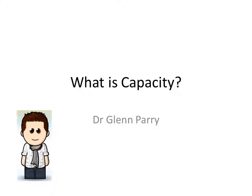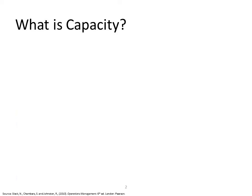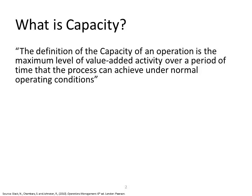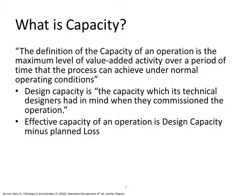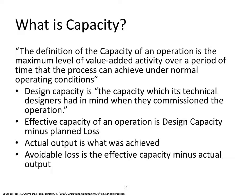So let's talk about what is capacity. The definition of capacity of an operation is the maximum level of value-added activity over a period of time that the process can achieve under normal operating conditions. We talk about design capacity — that is the capacity which the designers of the system had in mind when they commissioned the operation. The effective capacity of an operation is the design capacity minus any planned loss. The actual output is what you achieved, and the avoidable loss is the effective capacity minus actual output.